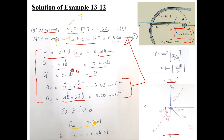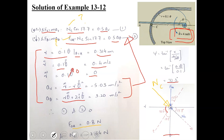The normal reaction force NC comes out to be −2.64 Newtons. The negative sign indicates that the assumed direction of NC was incorrect. Rather than acting along the negative N axis as assumed, NC actually acts toward the positive side of the N axis.